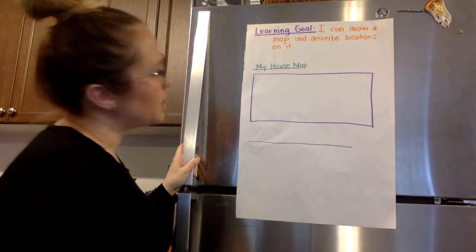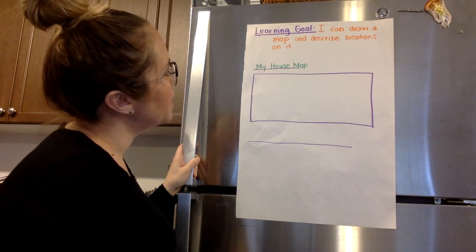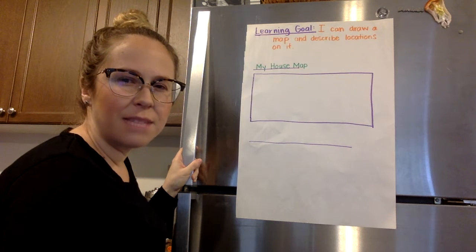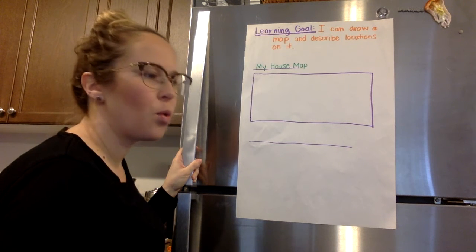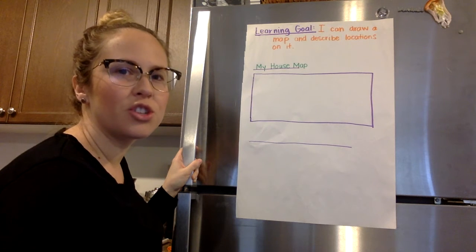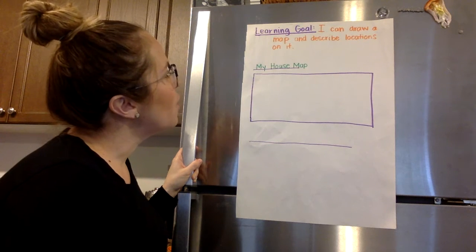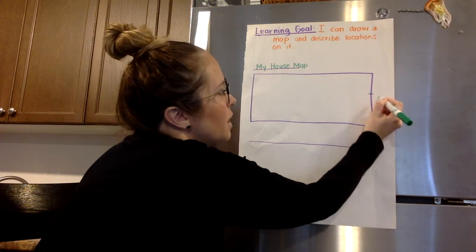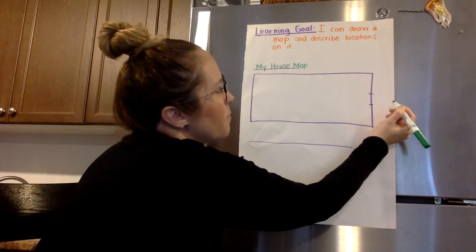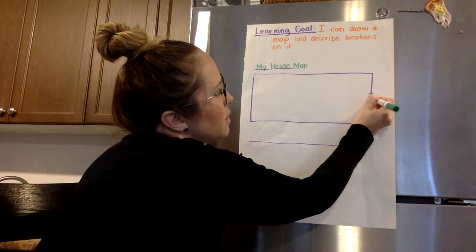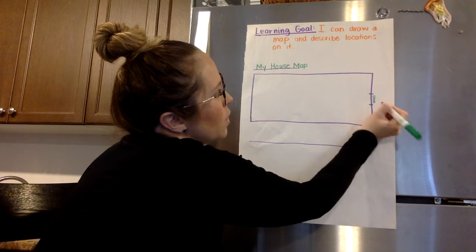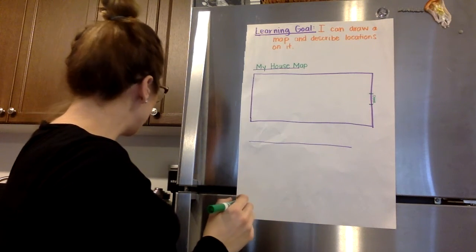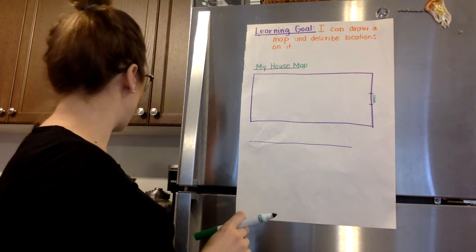And the first thing I'm going to do is think about where the doors might be. And that seemed to help me yesterday think about where everything was in relation to each other. So when I think about a door that comes in, I have a door that comes in over here. So I'm going to just label that door. And then as you come in the door, I'm going to use a different color to separate the walls.